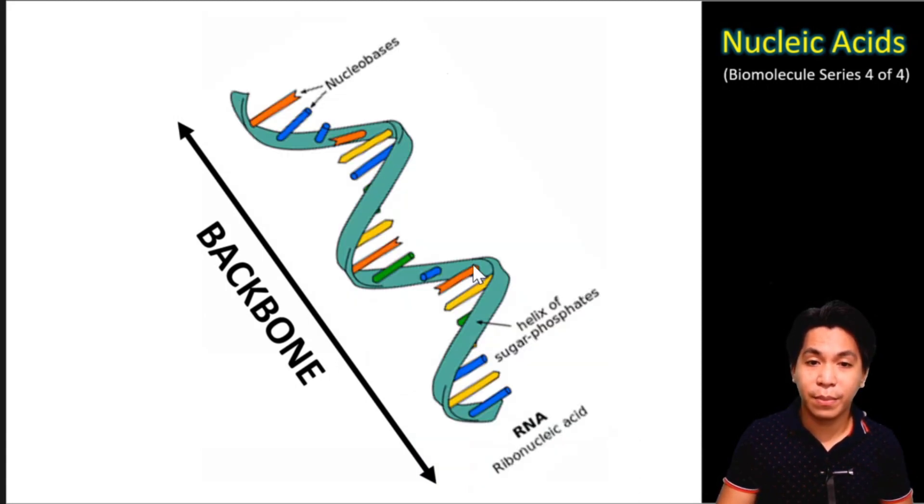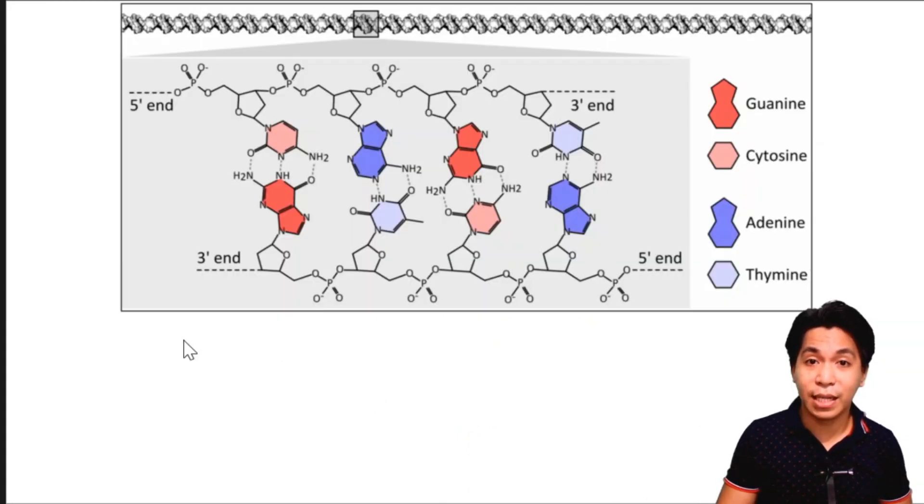This blue strip represents the backbone of your nucleic acids, which is again composed of a sugar and a phosphate group. And these sticks sticking out from the backbone are your nitrogen bases. All DNA follows a certain sequence.